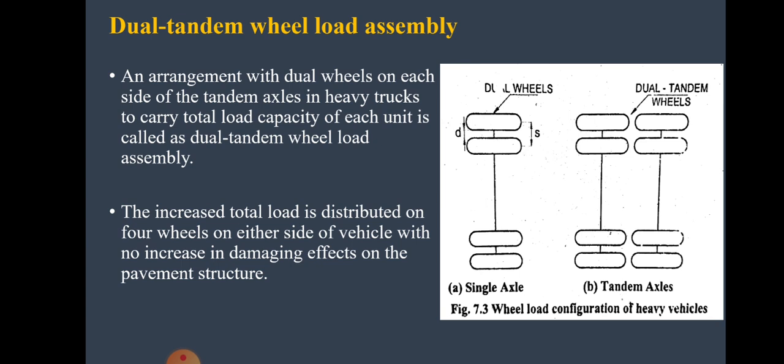This figure shows the wheel configuration of heavy vehicles. In the first figure, you can see a single axle — this represents a rear axle — where at both ends two wheels are provided, called a dual wheel assembly. In the second figure, two axles are provided at the rear end; this configuration is used when the truck is carrying heavy loads and has more capacity. Such a configuration is called a dual tandem wheel assembly. By providing tandem wheels, the distribution of load at the point of contact reduces — it distributes over more points, thus reducing the action of load.